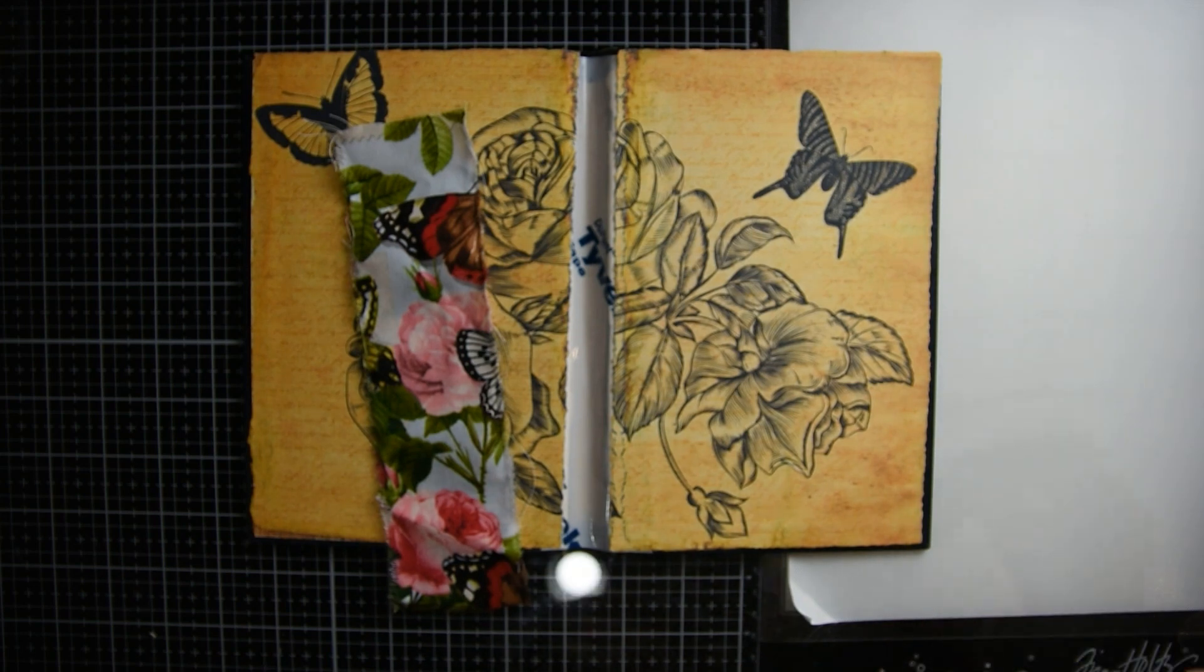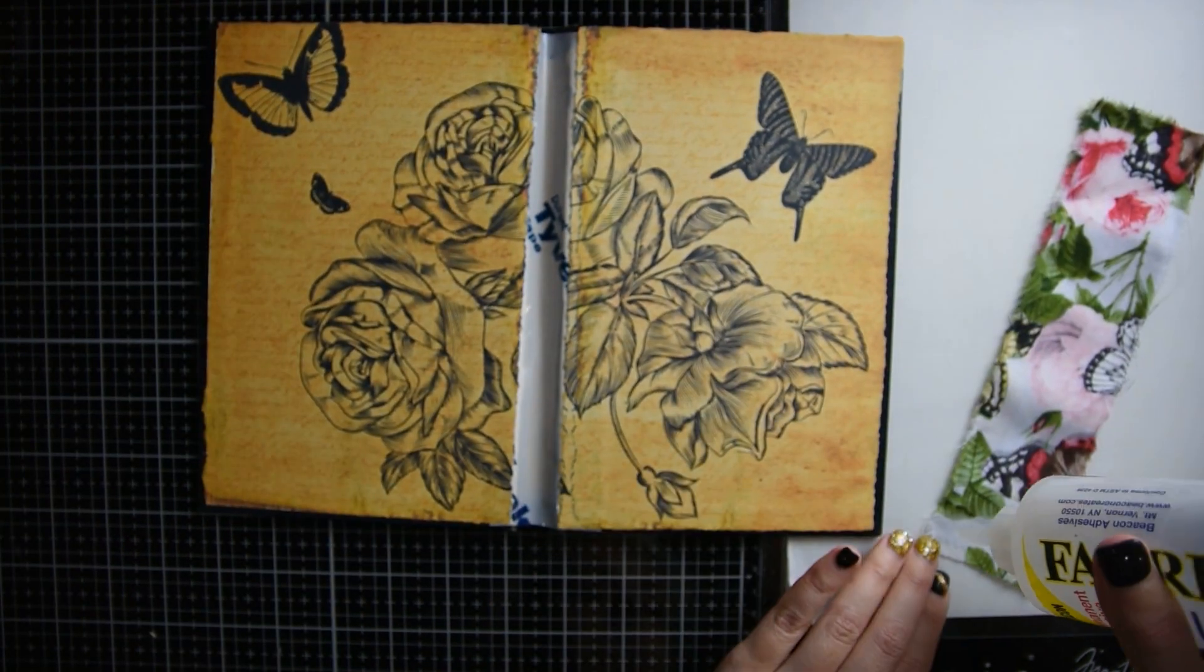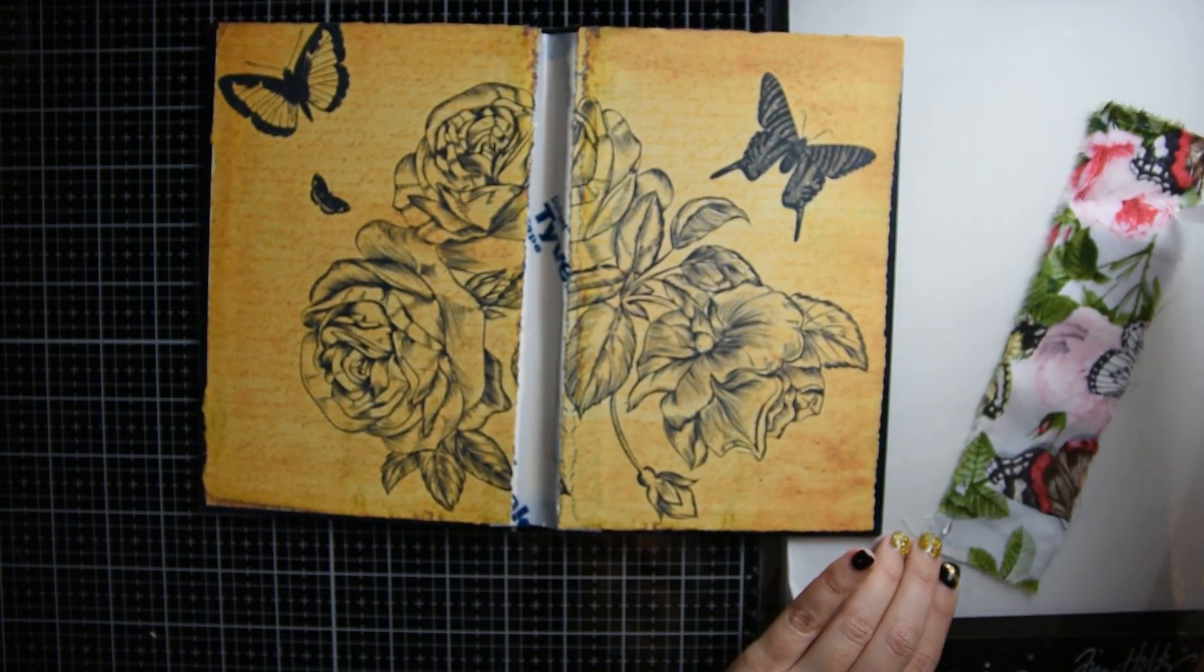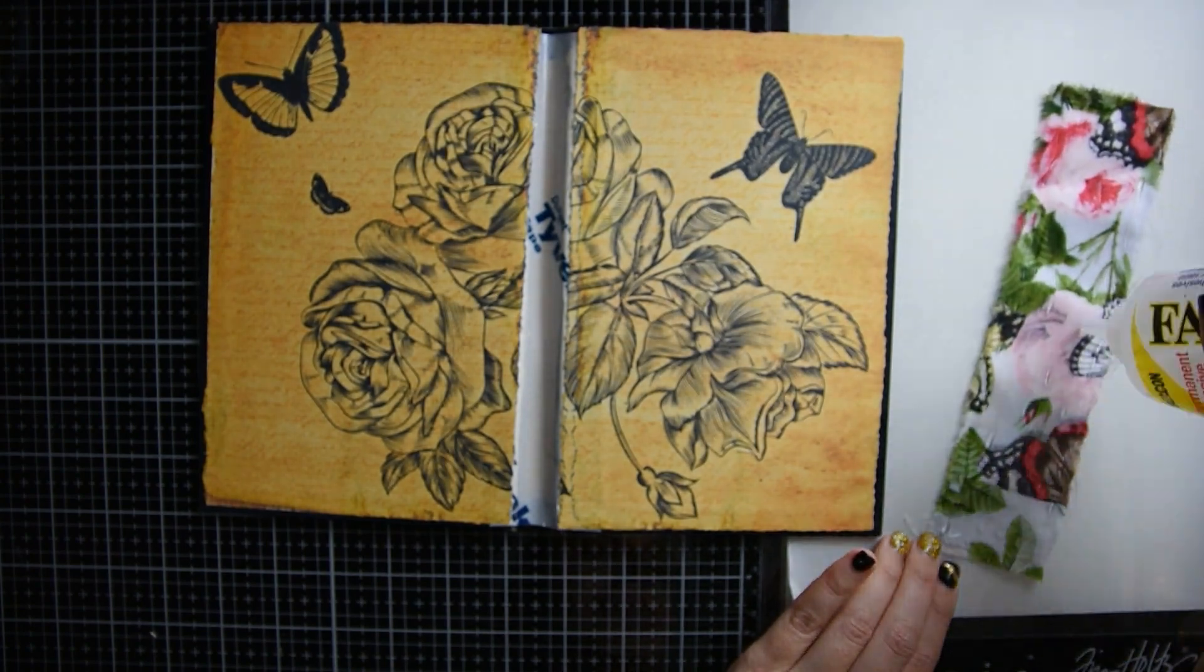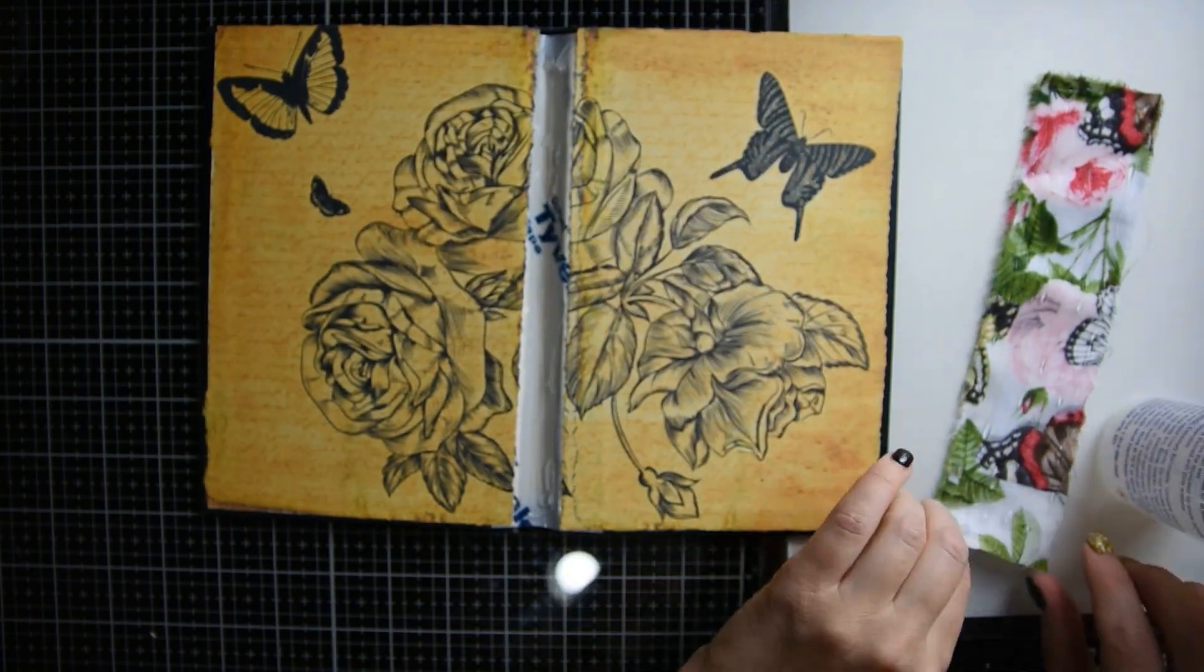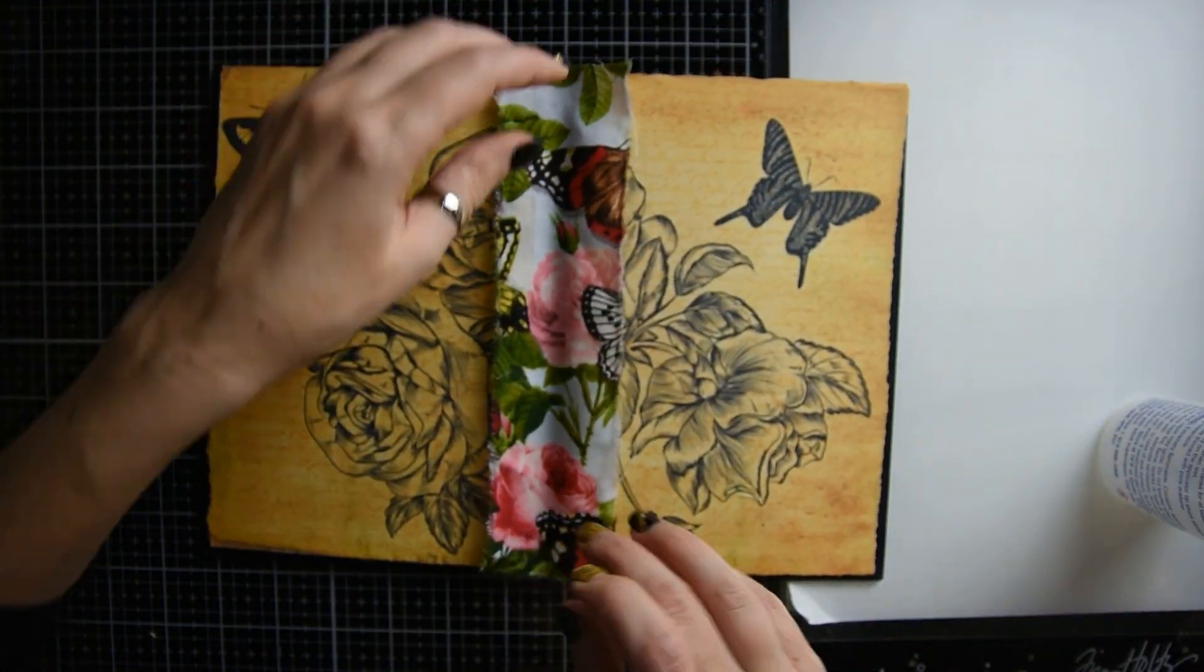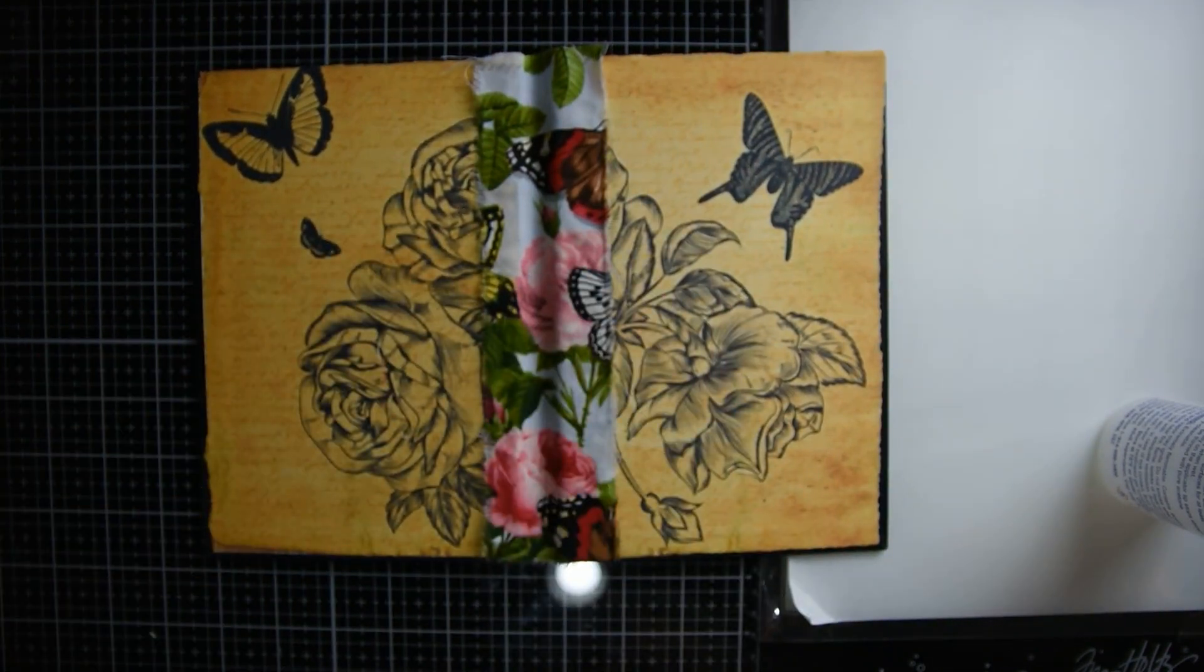And then the next step is you can use fabric or you can use muslin to cover your spine. I have this really pretty butterfly and flower fabric and I thought I would use that for this little journal. You're going to use fabric glue to glue it in.